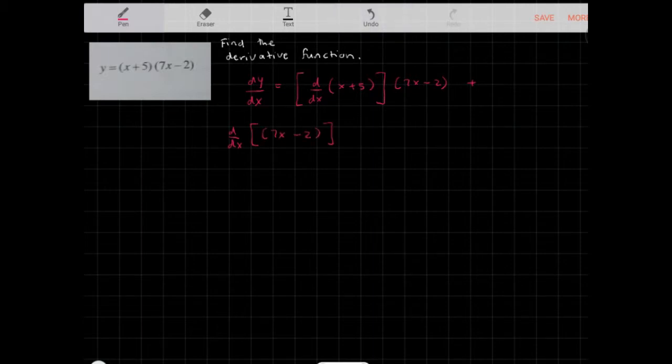And I simplify this, so dy/dx is equal to: derivative of (x + 5) here is 1 times the right hand factor (7x - 2), plus derivative of (7x - 2) is 7 times (x + 5).